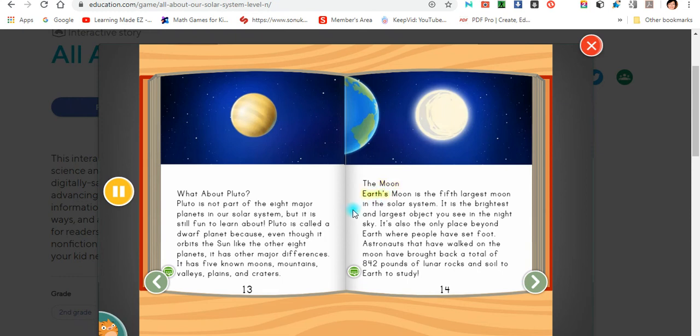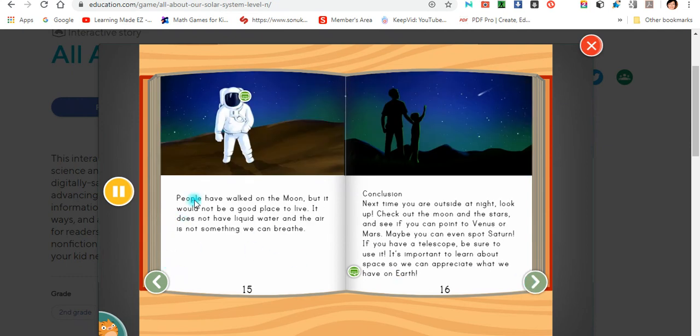The Moon. Earth's moon is the fifth largest moon in the solar system. It is the brightest and largest object you see in the night sky. It's also the only place beyond Earth where people have set foot. Astronauts that have walked on the moon have brought back a total of 842 pounds of lunar rocks and soil to Earth to study. People have walked on the moon, but it would not be a good place to live. It does not have liquid water and the air is not something we can breathe.